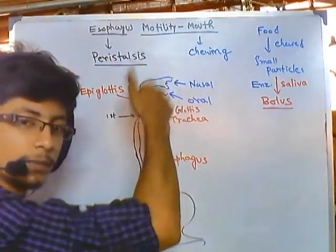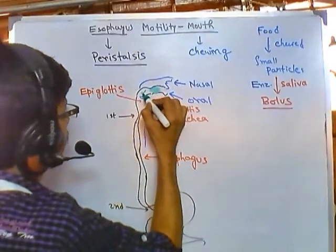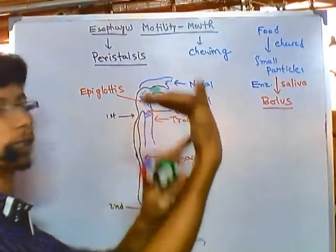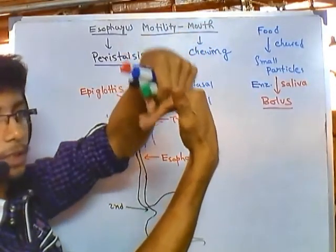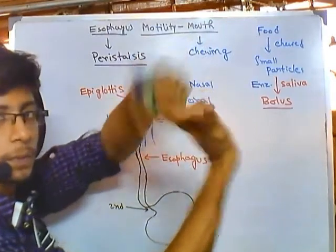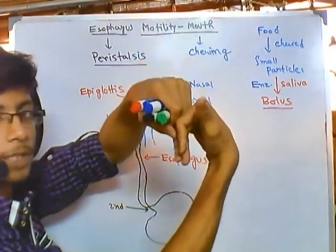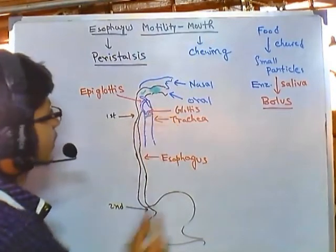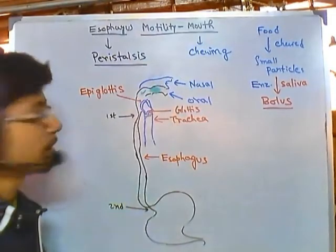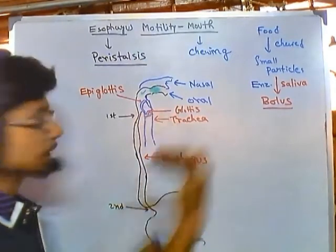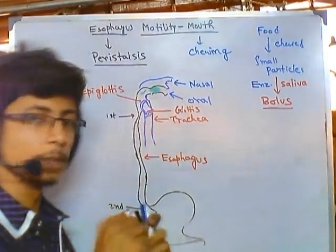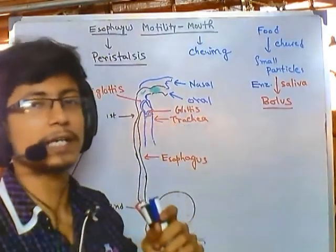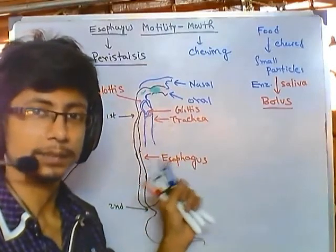As the food keeps moving and creates pressure on the epiglottis — which is a valve-like flexible part — it keeps pushing the epiglottis, causing it to fold. Once the pressure of the bolus hits the epiglottis it folds over and further blocks the glottis. This way there is no path for any food particle to enter the tracheal region, and the bolus keeps moving onward.